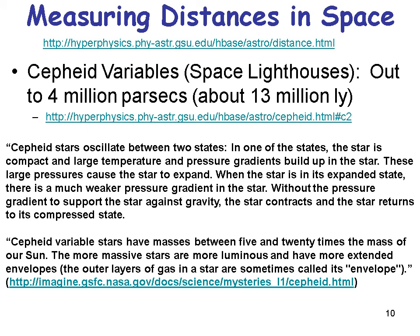Cepheid stars oscillate between two states, which causes their change in luminosity. In one state the star is compact, and large temperature and pressure gradients build up. These large pressures cause the star to expand. When expanding, there's a much weaker pressure gradient, so without that gradient to support the star against gravity, the star contracts back to its compressed state. Cepheid variable stars have masses between twenty and twenty-five times the mass of the sun, making them much larger, brighter, and more luminous, with extended outer gas envelopes far larger than our sun.